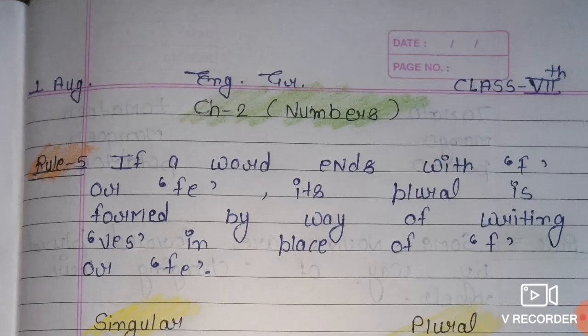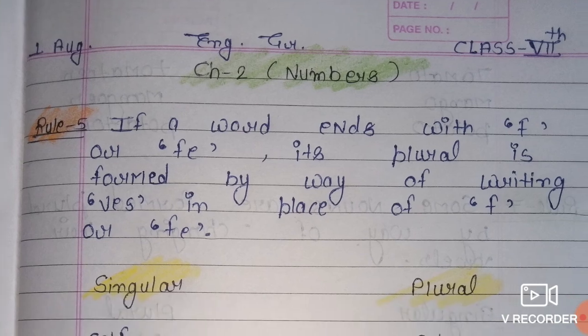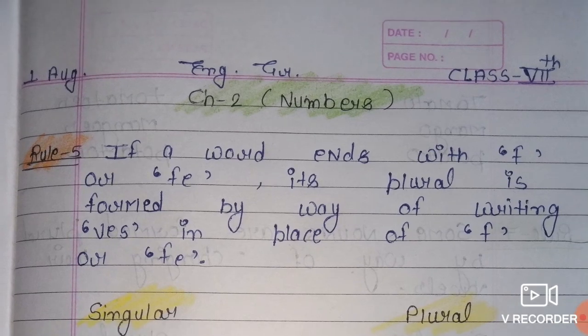Good morning all of you. Today we are going to read Chapter 2, Numbers, English Grammar for Class 7. We have already read rule number 4, so we continue today with rule number 5.